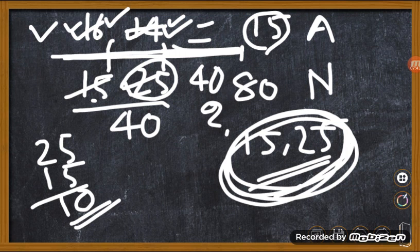Option 1: 28 years. Option 2: 29 years. Option 3: 24 years. Option 4: 31 years. Option 5: None of these. This is from Punjab and Sindh Bank PO 2010.